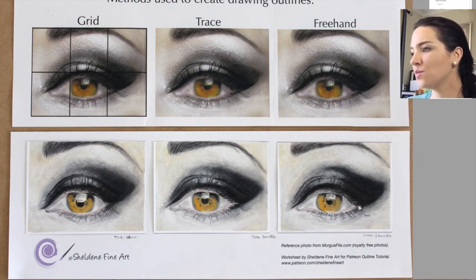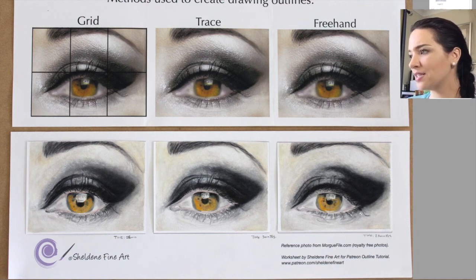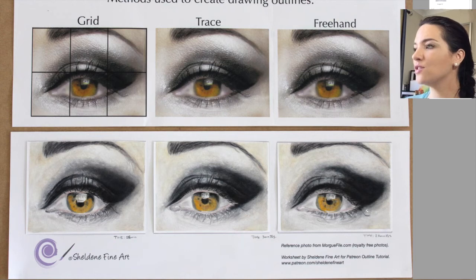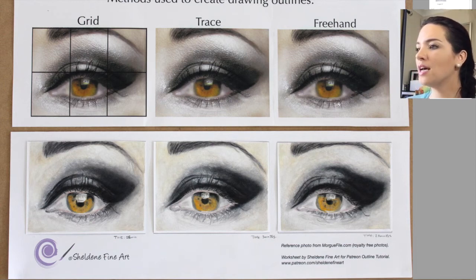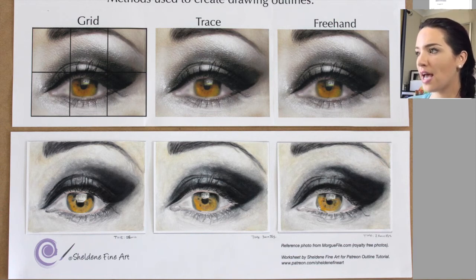The freehand one looks really good. Apart from this eyelash that's too low — that needed to be higher — everything else looks pretty damn close. I'm really happy with the way my freehand eye has turned out compared to the reference photo. I would say these two — the tracing and the freehand — are the closest to the actual reference photo.